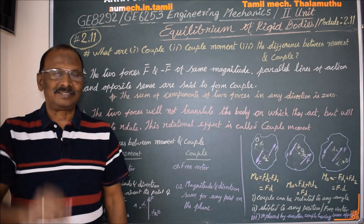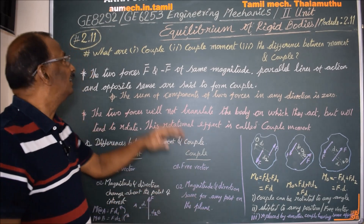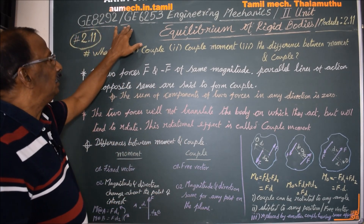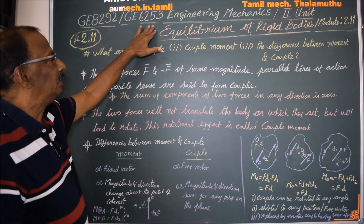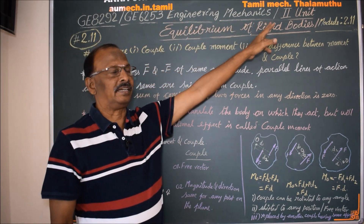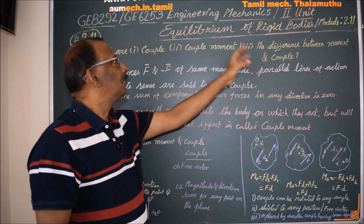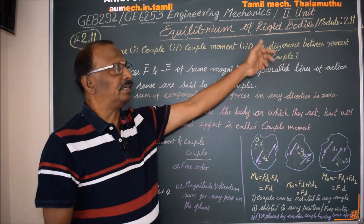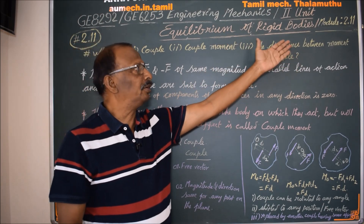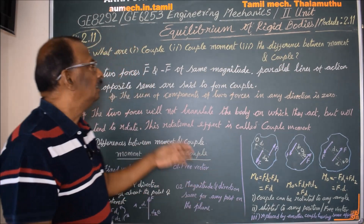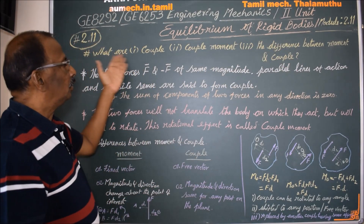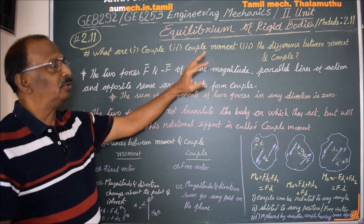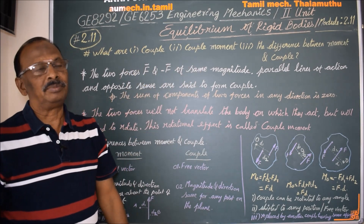Hello students. This is GE8292-GE6253 Engineering Mechanics, 2nd Unit. The 2nd Unit is Equilibrium of Rigid Bodies. This is Module 2.11, which is one of three subdivisions.